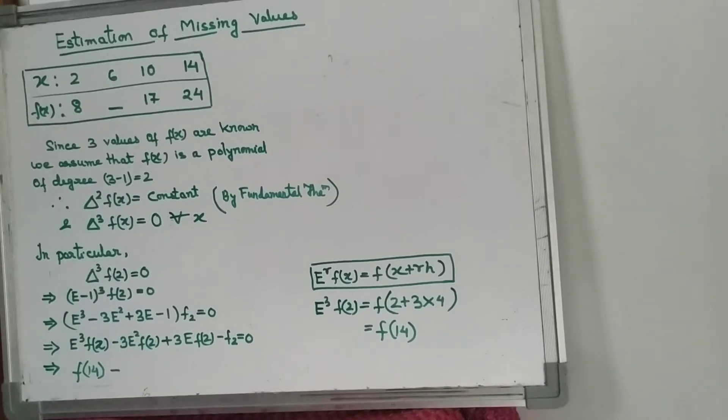As we know by the fundamental theorem of finite difference, if f(x) is a polynomial of degree 2 and we are taking the second difference, we always get a constant answer. So second order difference of f(x) will be constant.